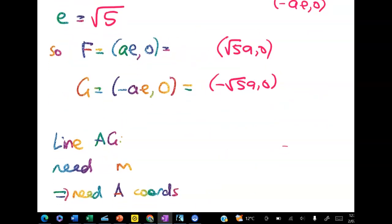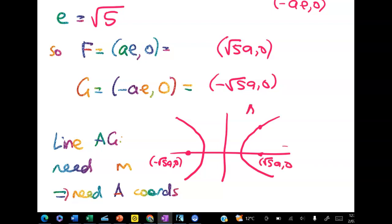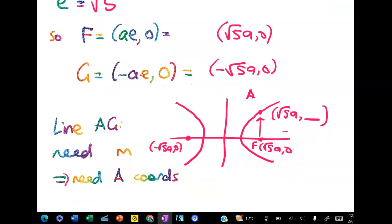We can start to put some values onto my picture. So here's my bad drawing centered at the origin. Here's g so g is at negative root 5a and 0 and here's f at root 5a and 0. Here's point a up here. Now a has got an x coordinate of root 5a because it's vertically above f but to get the y coordinate we're going to use the equation of my hyperbola.